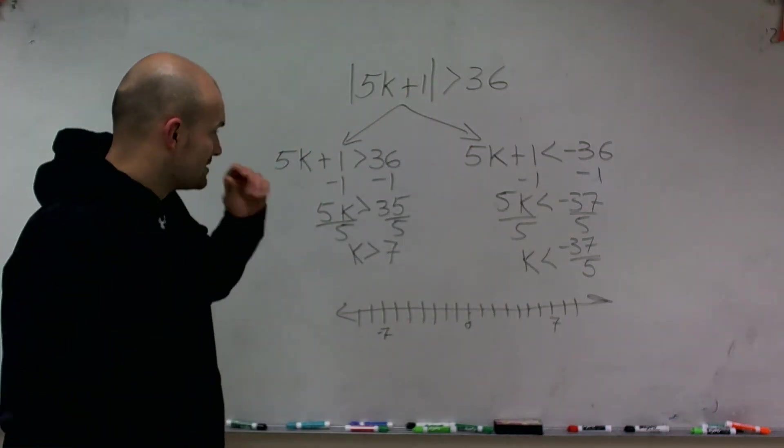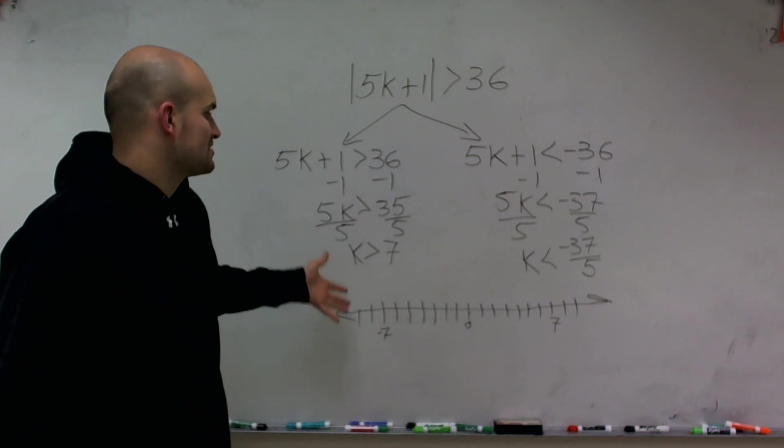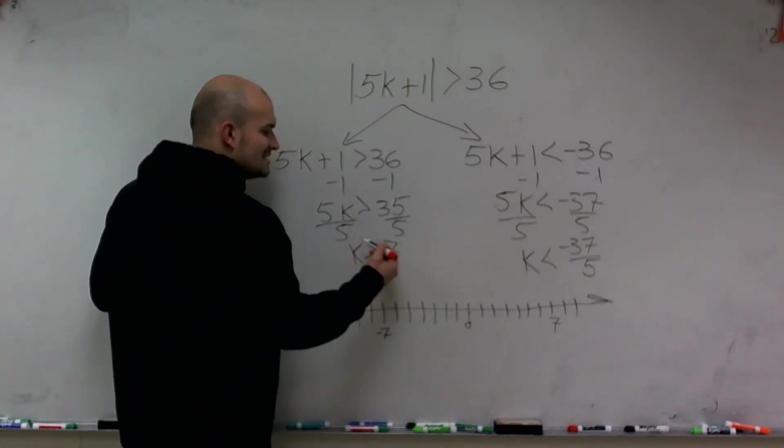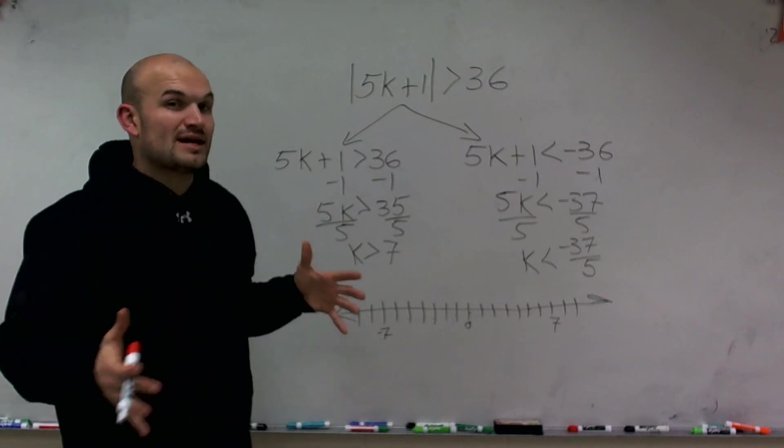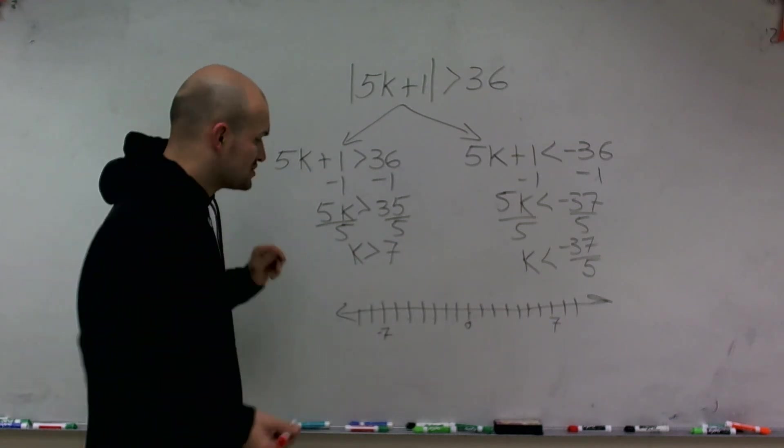So what we do is we look at, first of all, we want to plot our points, where exactly they're going to be. And I notice the inequality symbol, since it's greater than and less than, not greater than or equal to, or less than or equal to, I'm going to have an open circle.